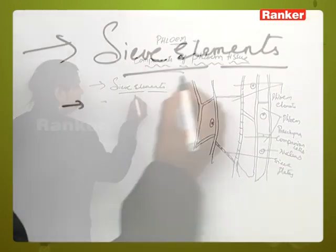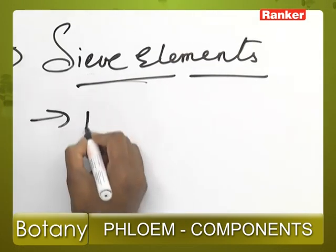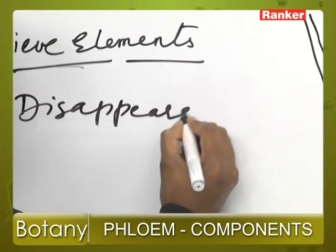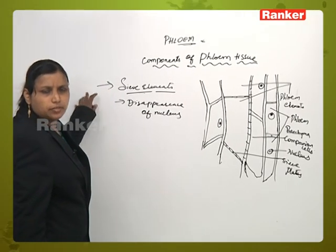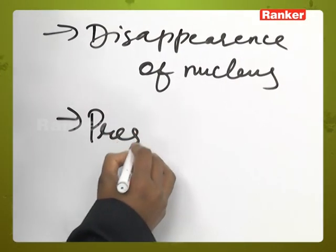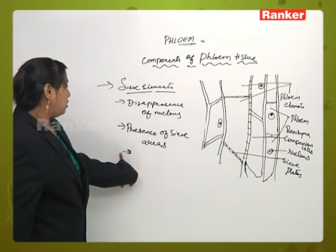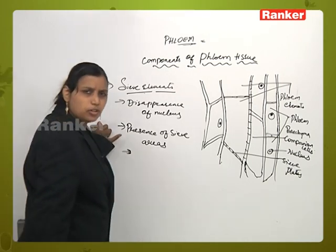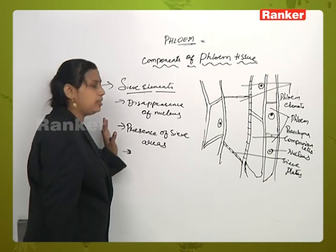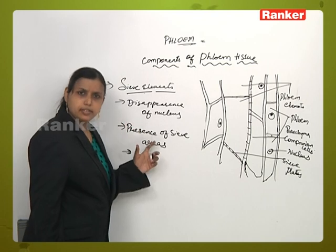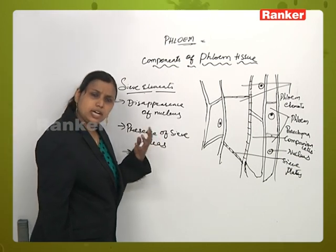Sieve elements will not have a nucleus — they show the disappearance of the nucleus. The sieve elements have the basic characteristic that they will show the presence of sieve areas, which are considered important components of the sieve elements. These play an important role in the translocation of food material. The sieve elements and sieve tubes, connected with sieve areas, play a major role in the translocation of organic molecules or food material from one place to another in the plant body.